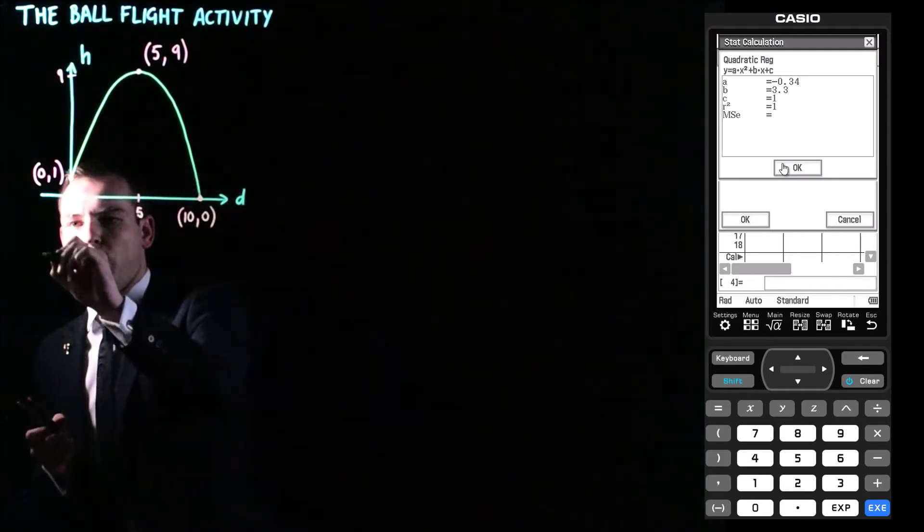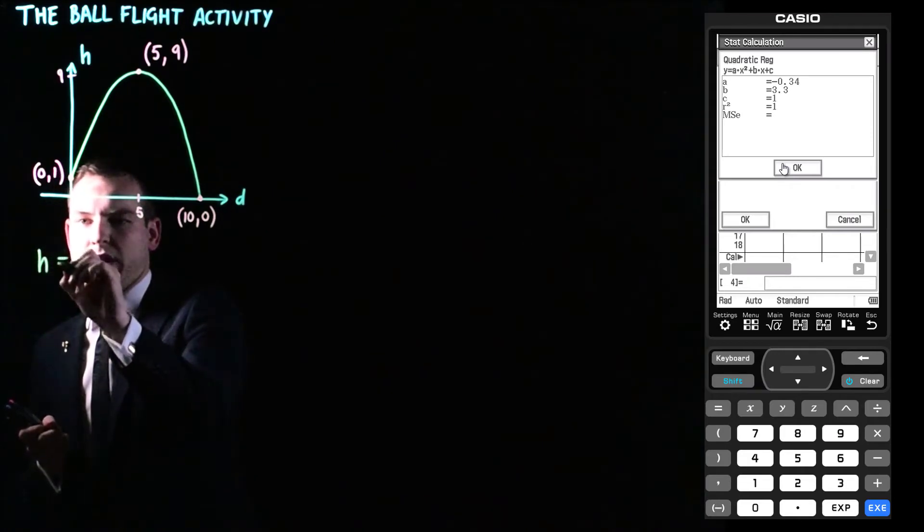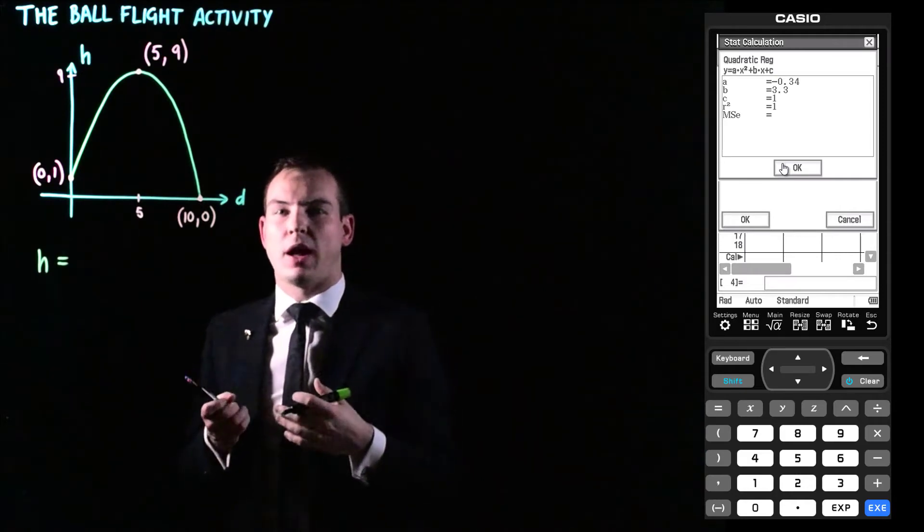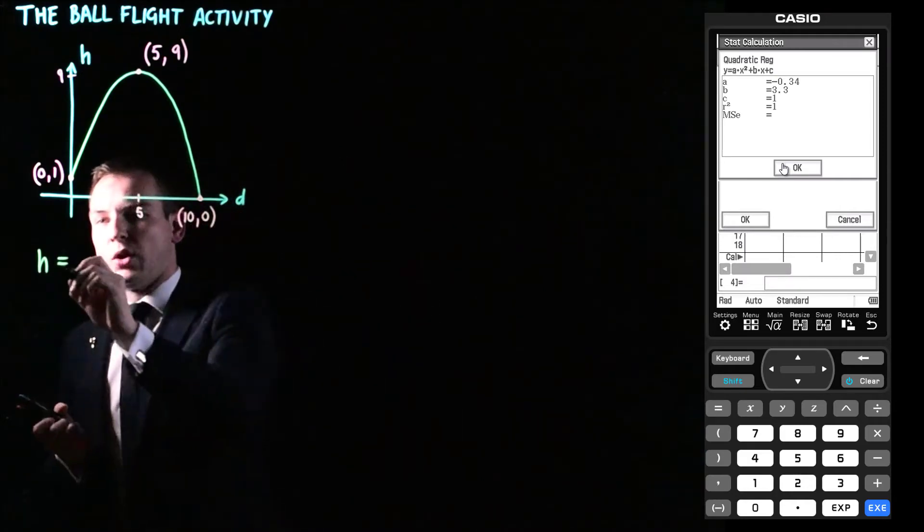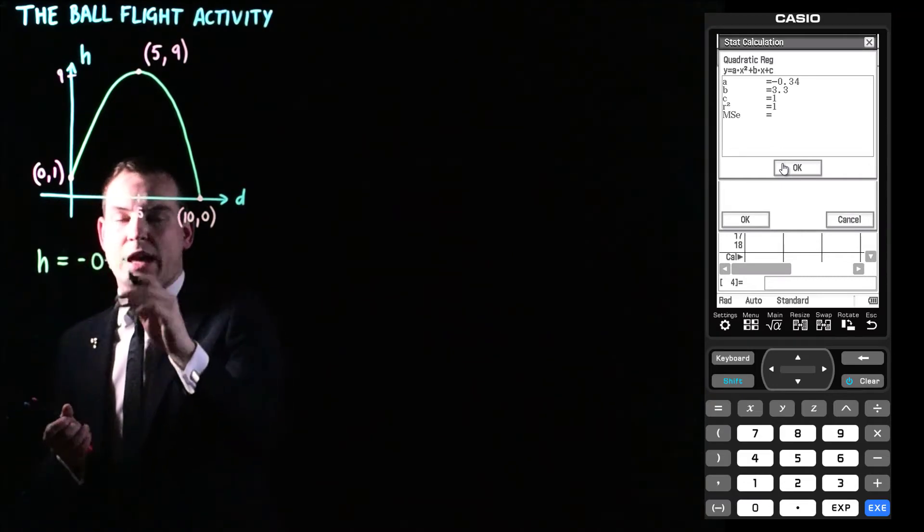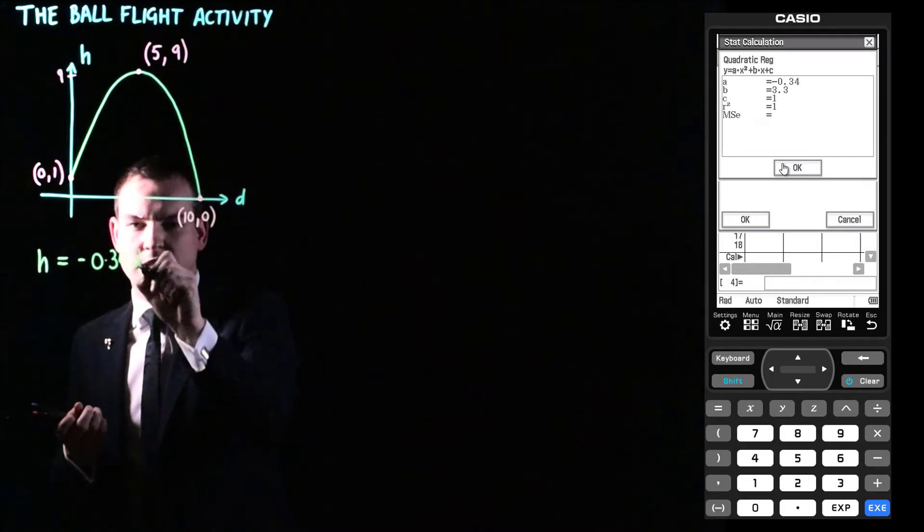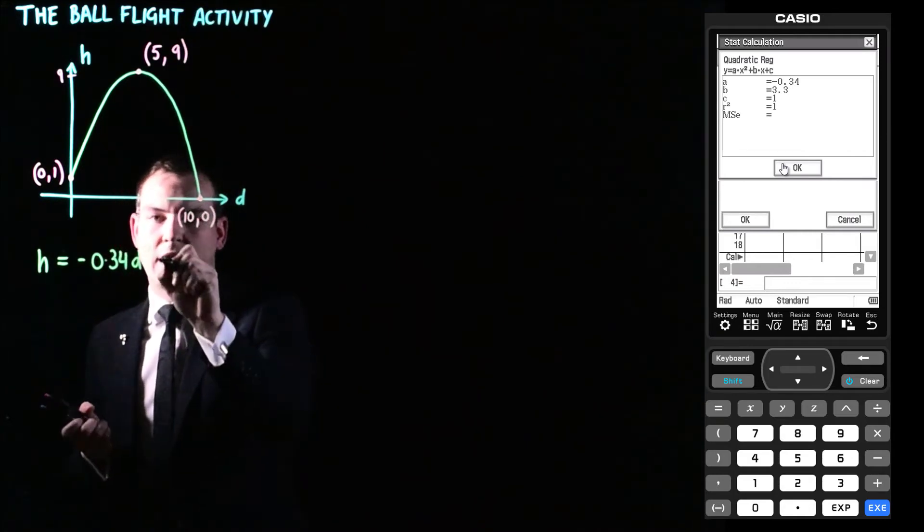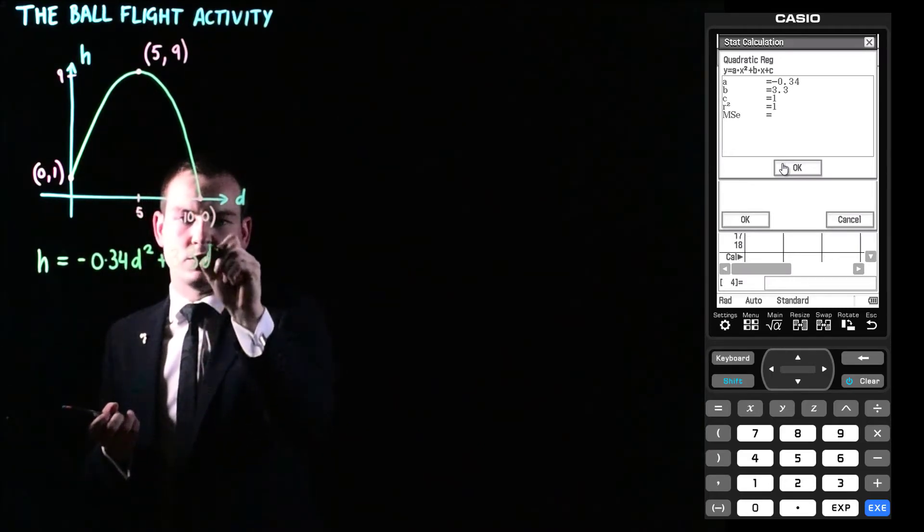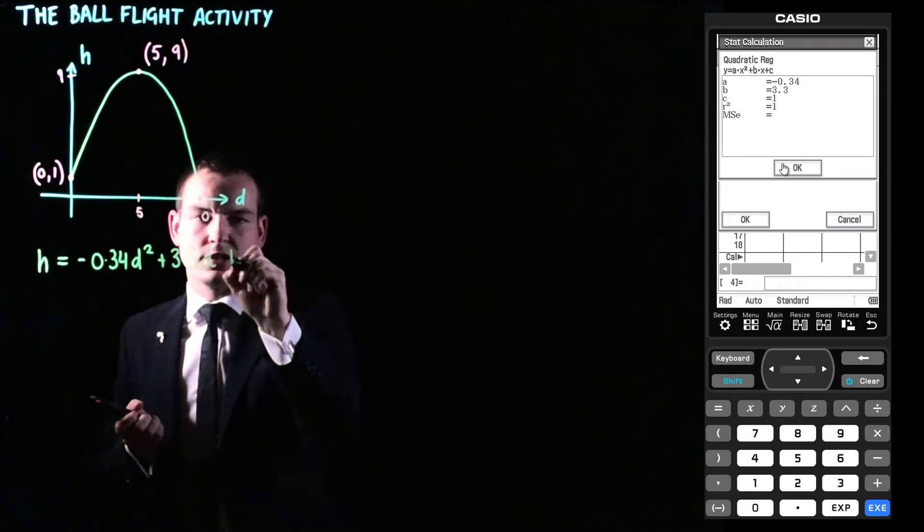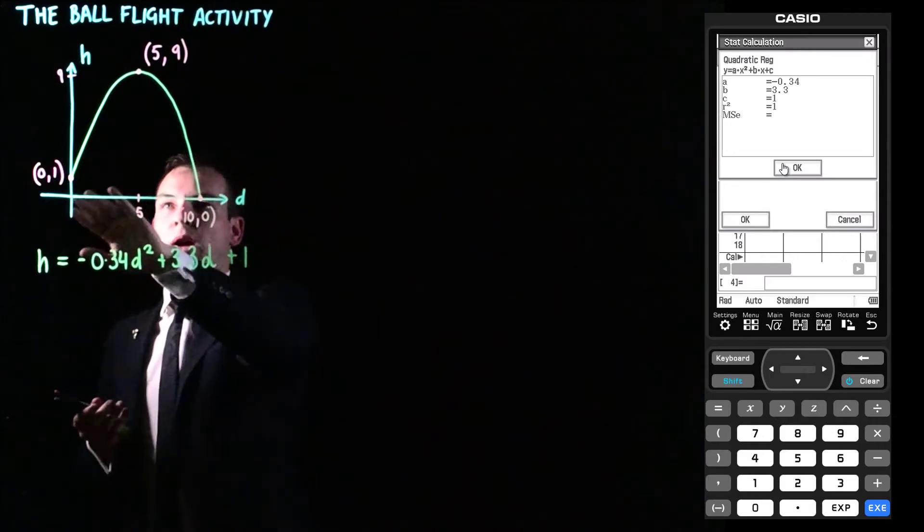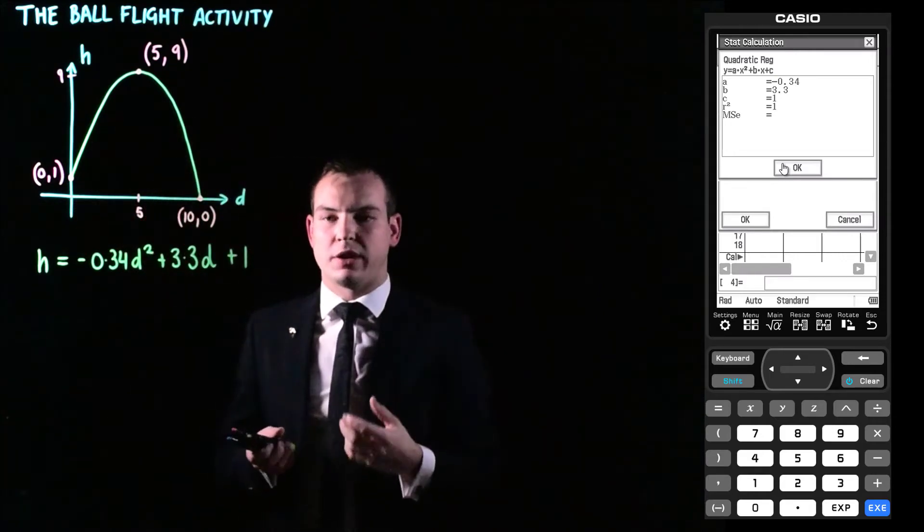So we can go ahead and we can now write an equation with that information. So based on what the calculator gave us, we can now write out the general form of this equation. And we're going to use H here because the variables we discussed might be more appropriate for a ball flight situation. So H is going to equal negative 0.34. And that was the coefficient of X squared. So that's now going to be D squared. And then we had plus 3.3 as the B value, which is the coefficient of just X or in this case D. And that constant value was plus one. So this is the equation that describes the flight path of that shuttle that I hit in that video.